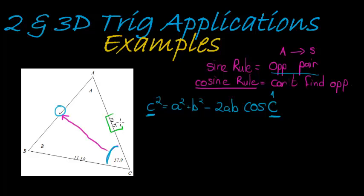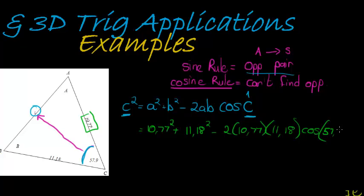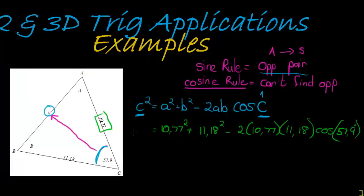What do we have? We have 10.77 squared plus 11.18 squared minus 2 times 10.77 times 11.18 times cos of the angle, which is 57.9 degrees. Let's calculate that. Remember, this is for C squared - for C, we're still going to have to take the square root of that answer.